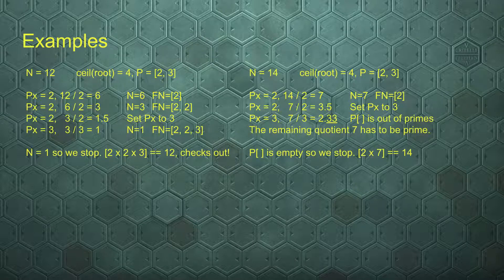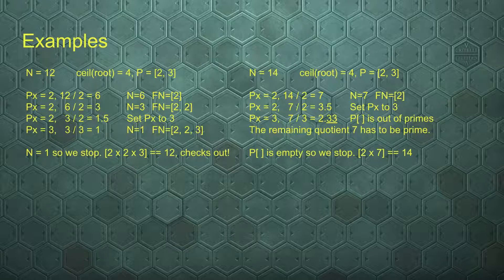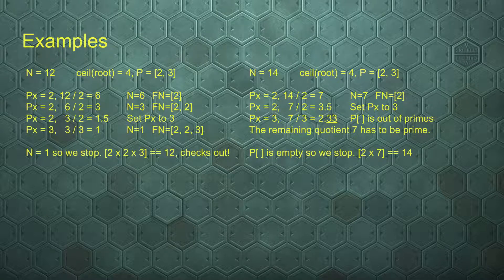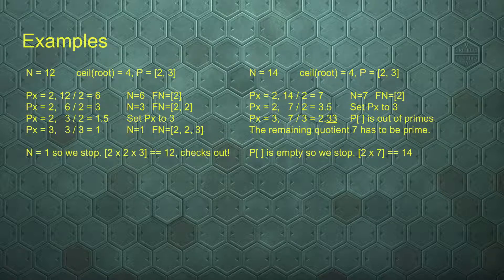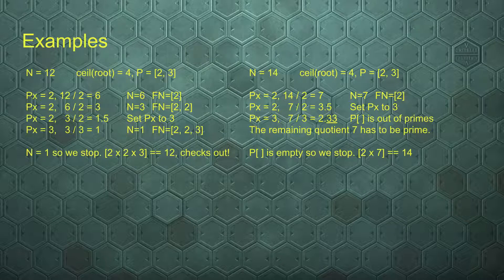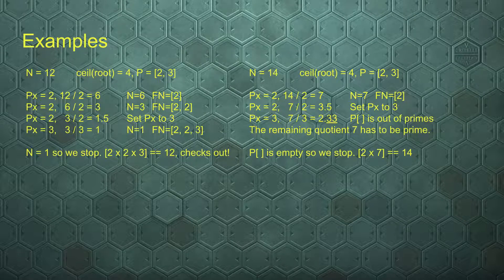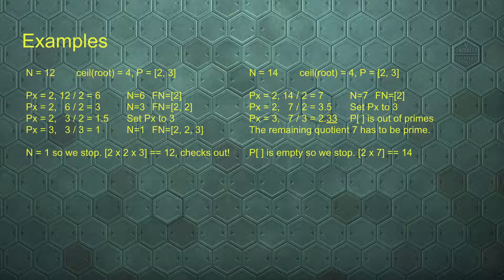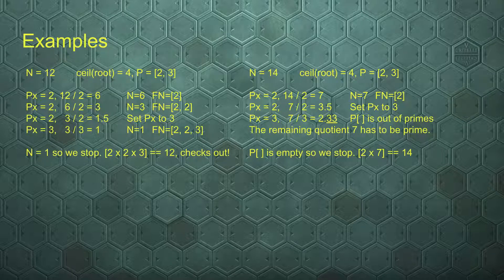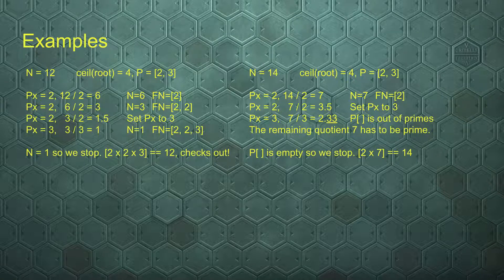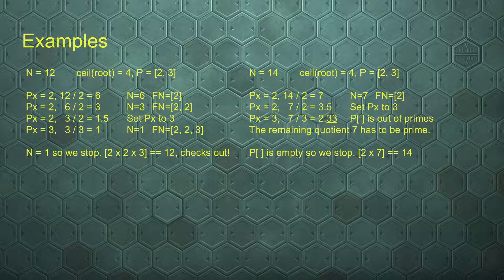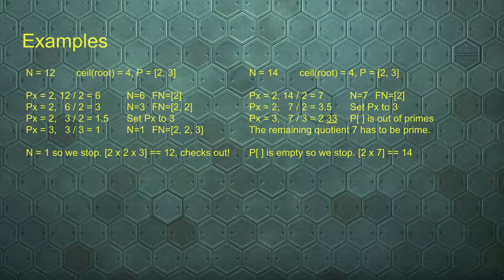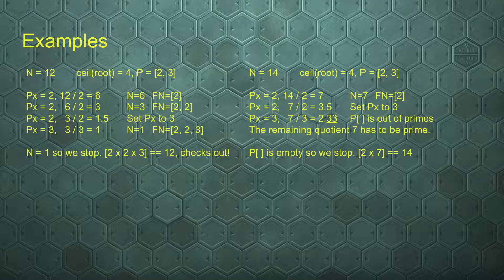n is 14. Our limit is still 4, so the primes we want to test are still 2 and 3. 14 is divisible by 2 leaves us 7, so 2 is a prime factor, it's added to the list, and the quotient is set to 7. 7 cannot be divided by 2, so we skip to 3. 7 can also not be divided by 3. Since we no longer have primes on our list but we do have a remainder, that remainder is prime. So we add the remainder to the list, we stop testing. Our list is now complete, because the 2 we found earlier and the 7 that was remaining together make 14 again.